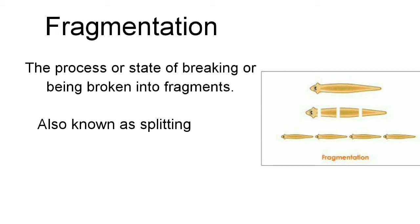This method of reproduction is seen in many organisms such as filamentous cyanobacteria, molds, lichens, many plants and animals such as sponges, flatworms, some annelid worms, and sea stars.